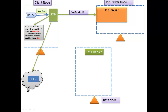If both conditions are satisfied, the client copies all configuration files and the job JAR file to HDFS with the default replication factor of three. All JAR files and configuration files are copied into the Hadoop cluster with this default replication factor. Then the client submits the job to the job tracker.